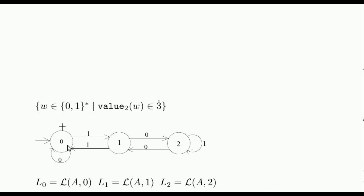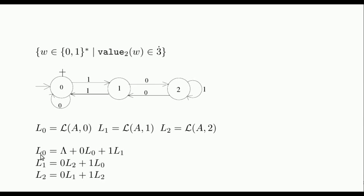Let L0 be the language recognized starting the run from state 0. Note that, actually, L0 is the language of the multiples of 3 because the initial state is 0. Similarly, let L1 and L2 be the languages recognized starting the run from 1 and 2, respectively. The recognized words from state 0 are either the empty word, since state 0 is accepting, or they start with the symbol 0 followed by a word that is accepted starting from state 0, or they start with the symbol 1 and are followed by a word that is accepted starting from state 1.